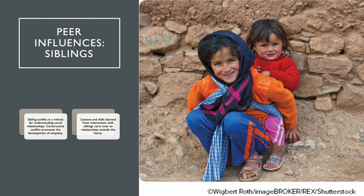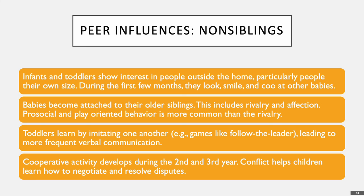Lessons and skills learned from interactions with siblings carry over to relationships outside the home. Peer influences are also important — peers are non-siblings. Infants and toddlers show interest in people outside the home, particularly people their own size. During the first few months, they look, smile, and coo at other babies, and babies become attached to their siblings, including both rivalry and affection. Pro-social and play-oriented behaviors are more common than rivalry. Toddlers learn by imitating one another through games like follow the leader. Cooperative activity develops during the second and third year, and some conflicts help children learn to negotiate and resolve disputes.